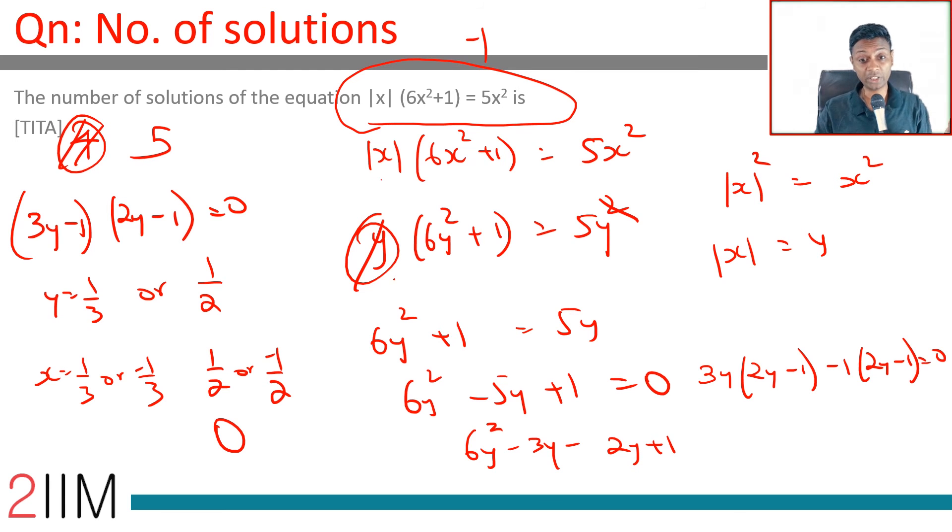Every time you cancel on both sides, you've got to keep in mind that you simply cannot cancel 0 on both sides. That means when you cancel, you're saying this cannot be 0. So you have to worry about the time where it becomes 0 and then account for that solution.